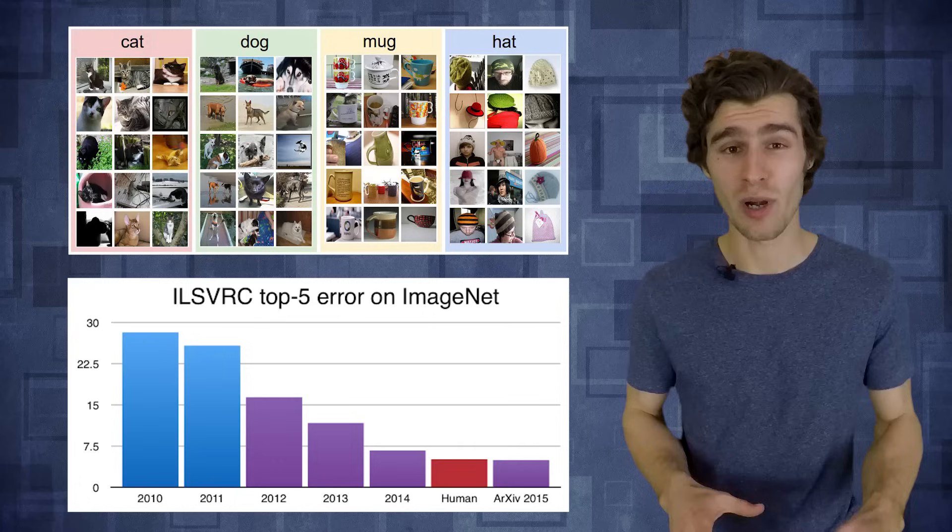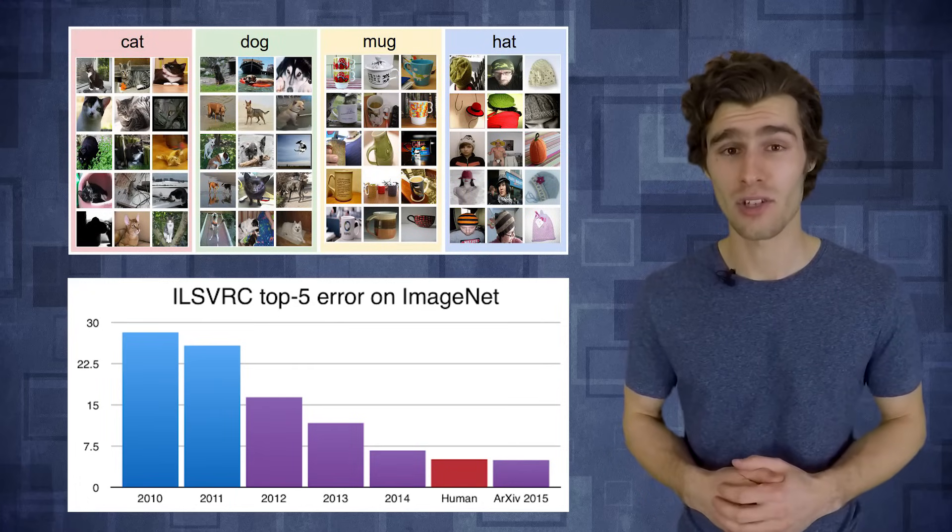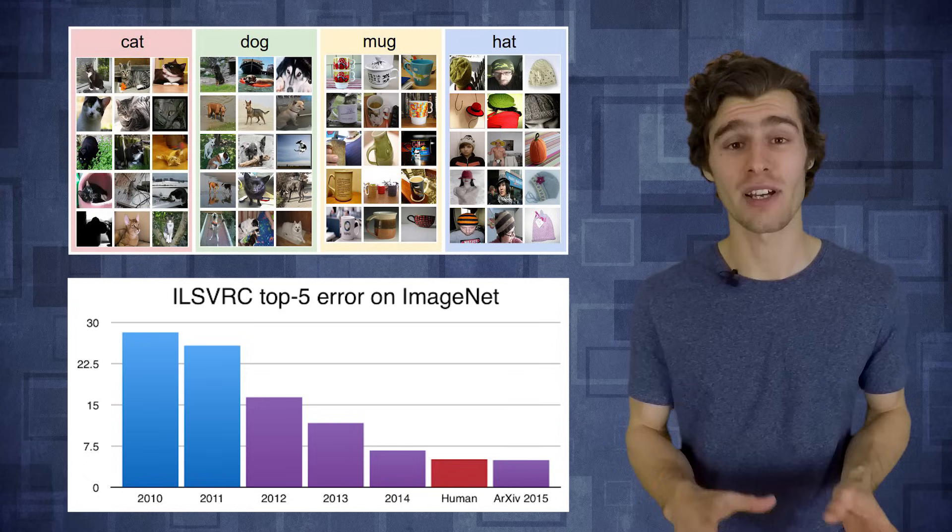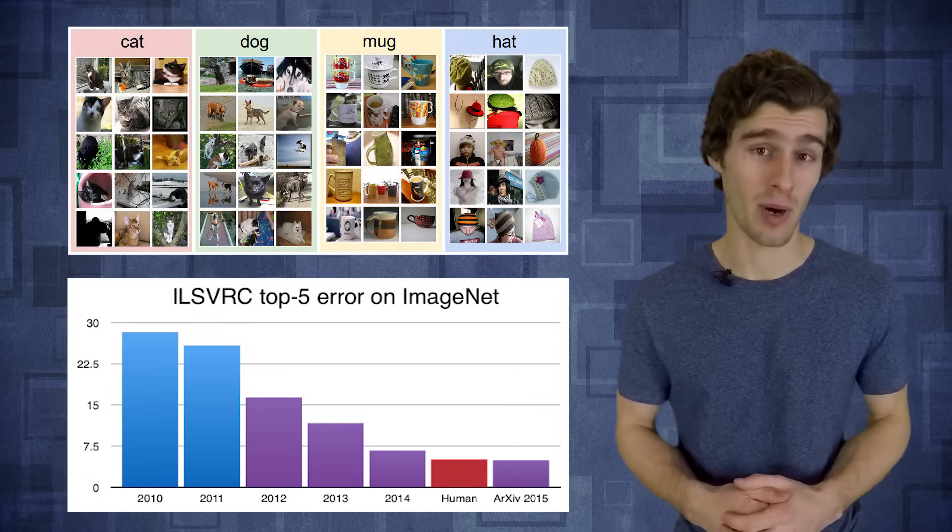Ever since the impressive breakthrough on the ImageNet classification challenge in 2012, the successes of supervised deep learning have continued to pile up. And people from many different backgrounds have started using deep neural nets to solve a wide range of new tasks, including how to learn intelligent behavior in complex dynamic environments.